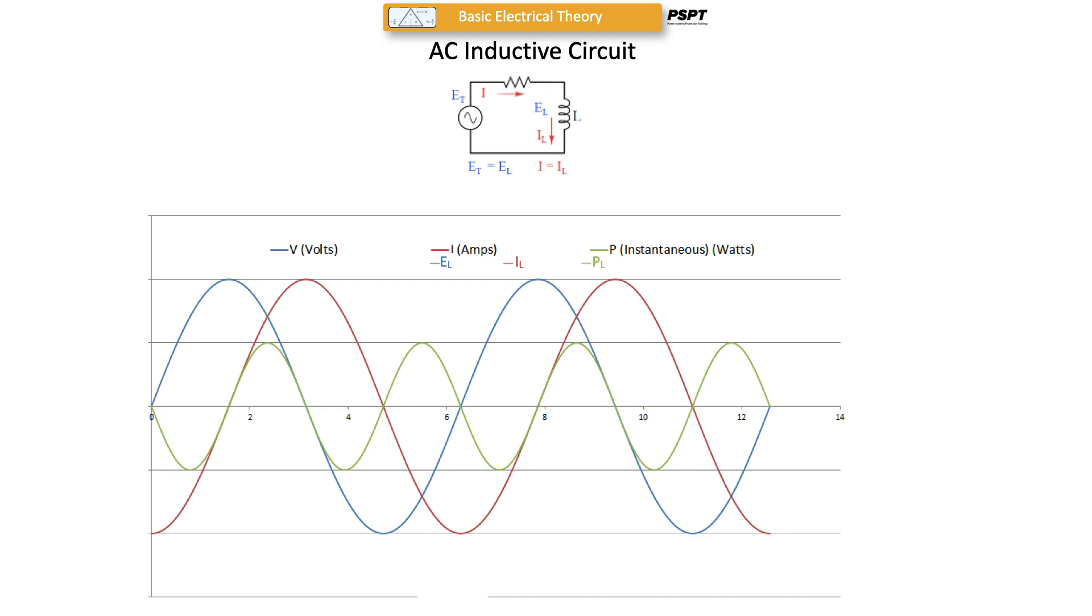Notice on the graph here that the power goes from zero to a maximum, back through zero, up to a positive maximum, back to zero, down to a negative maximum, as the current and voltage swing through their positive and negative crests.